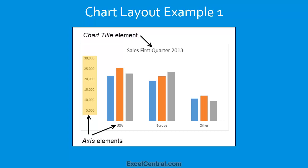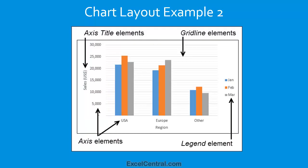Let's now look at another Chart Layout example. In this example, I've identified four of the Chart Elements. First of all, the Axis Title elements, which describe the values that are shown in the Axis elements. And then there are the Axis elements themselves: the Horizontal X-Axis showing USA, Europe and Other, and the Vertical Y-Axis showing values.